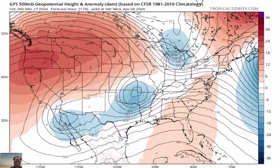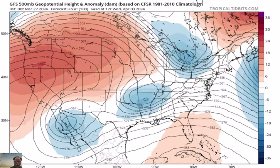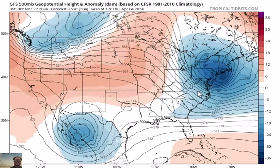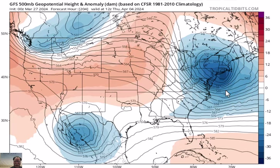Moving into the middle and latter part of next week, this is the system that could produce a decent snowfall across portions of the northeastern states — currently in the speculation phase. We're talking about the next Wednesday-Thursday timeframe. There will be a colder than normal air mass sliding into the northeastern states, along with a potential pretty deep upper level low that could spawn accumulating snow. This is seven or eight days out from right now, something we'll monitor over the next several days.